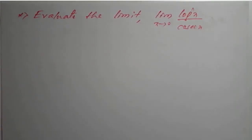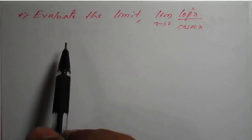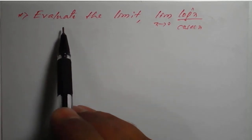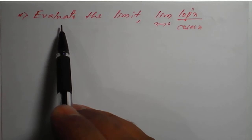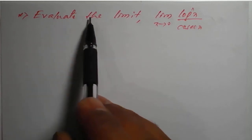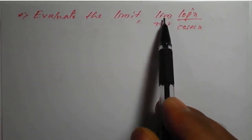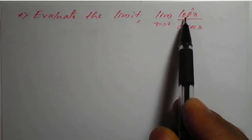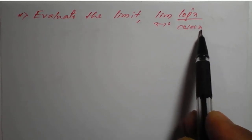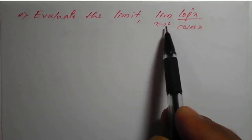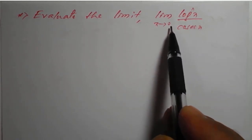Hello everyone. In this session, we will see a problem based on limits. The problem is: evaluate the limit of log of x divided by cosecant of x as x tends to 0.